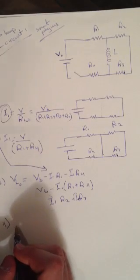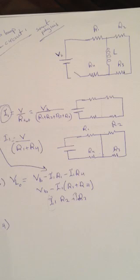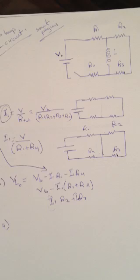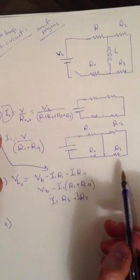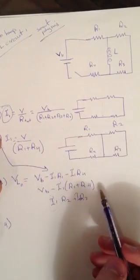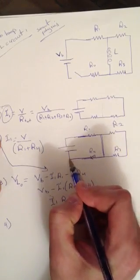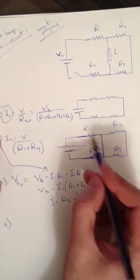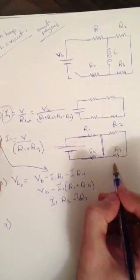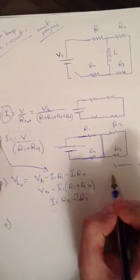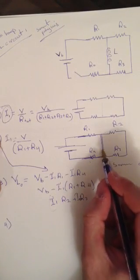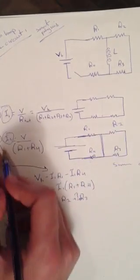Question four asks: what is i_L after the switch has been closed for a long time? After a long time the inductor acts like a plain wire — no inductor. The same current flows through R1, through the inductor branch, and back through the battery — all in series. So i_L equals i1, which is the same answer we got from question two.